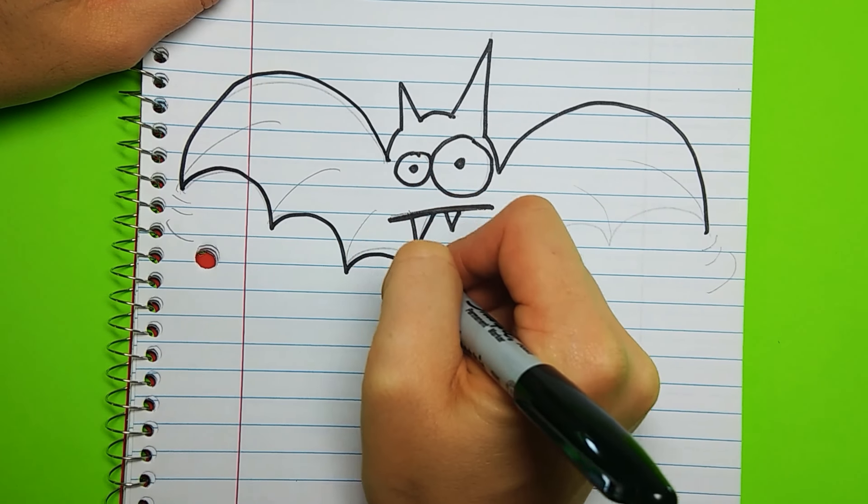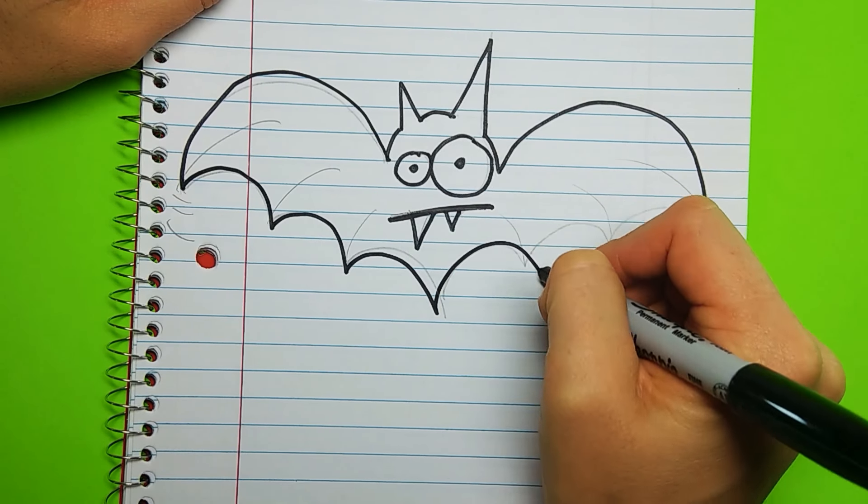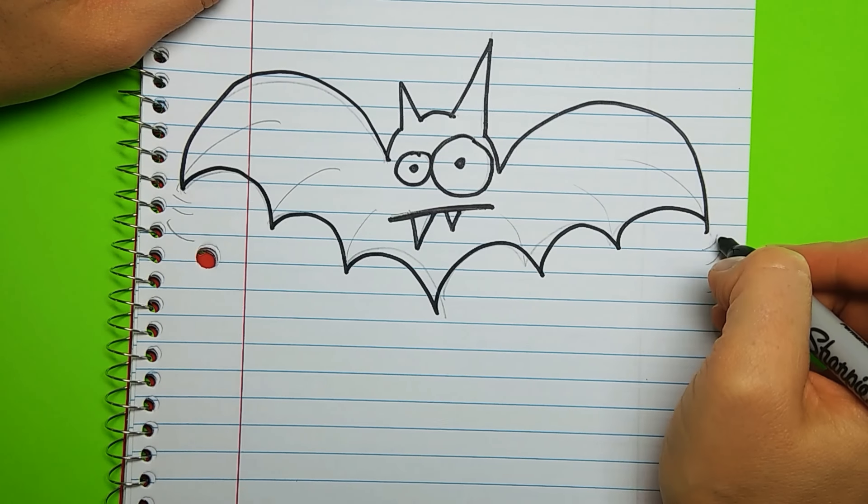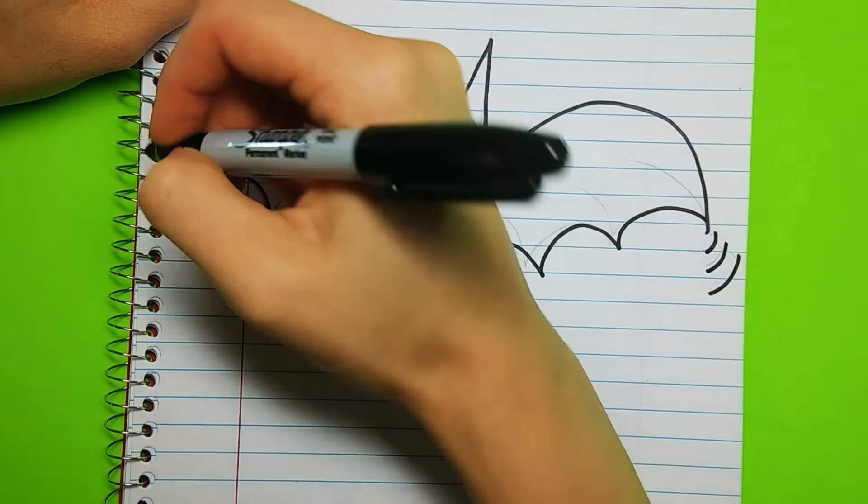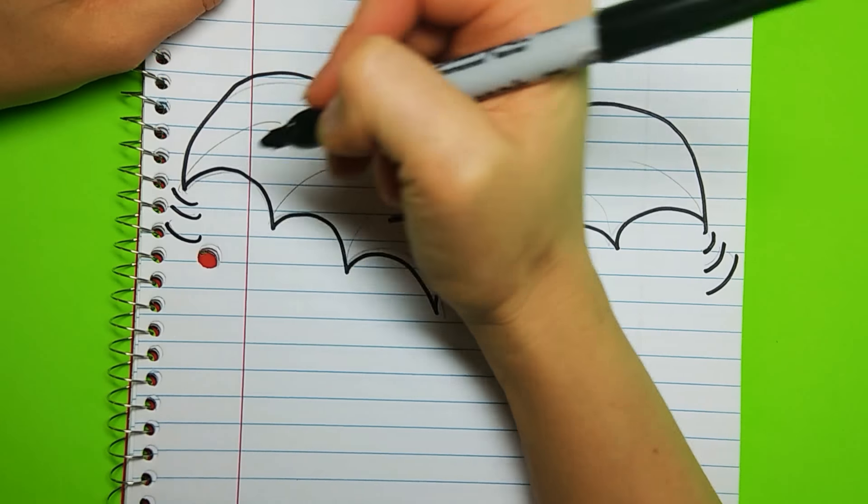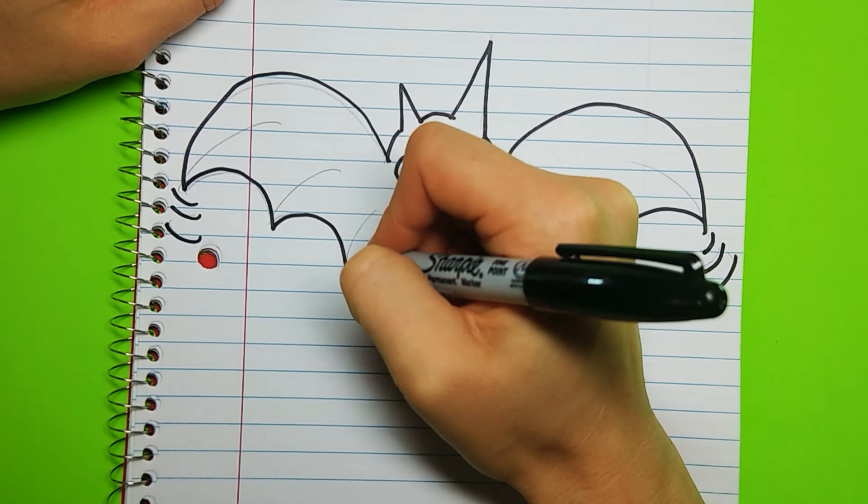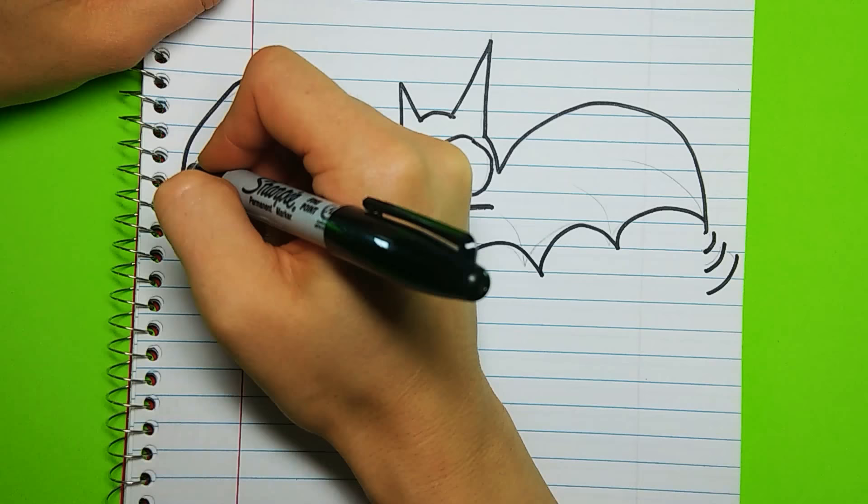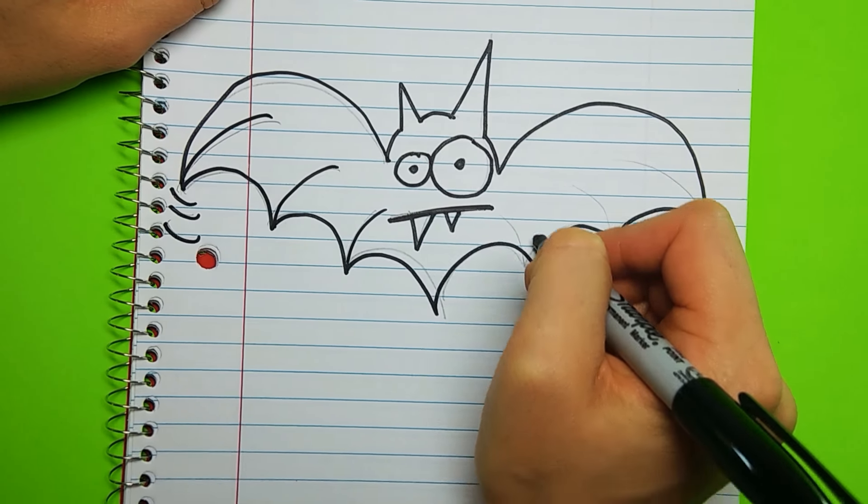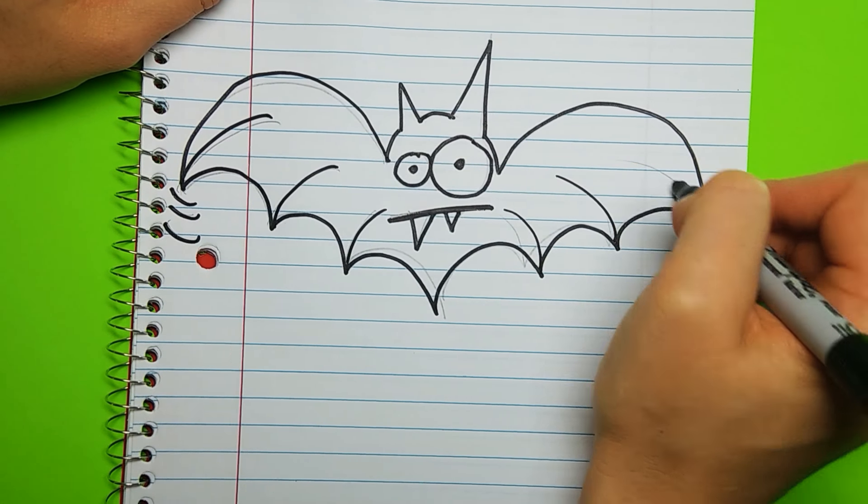Then one, two, three half circles. One, two, three. And then of course the movement lines coming as they move out, they get a little bigger. And the extra detail if you want, right on the tips of the wings, three half circles again. One, two, three.